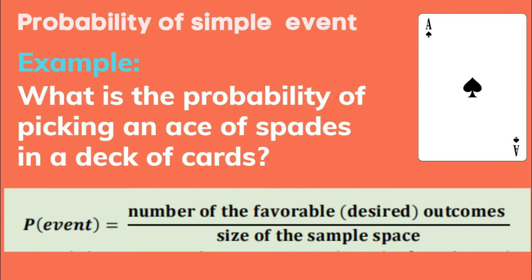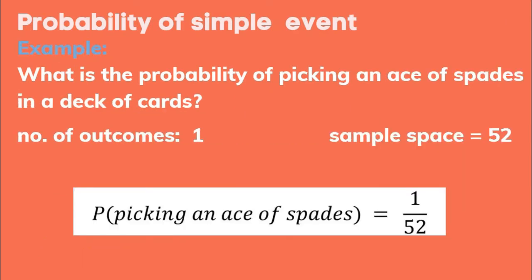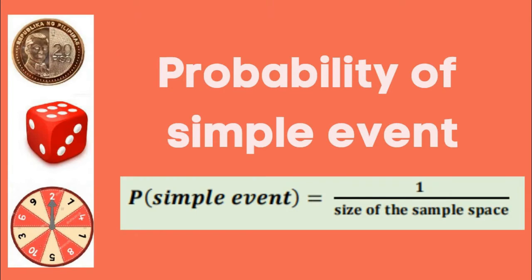Next, what is the probability of picking an ace of spades in a deck of cards? The event is picking an ace of spades. There is only 1 ace of spades, so the number of outcomes is 1. There are 52 cards in a standard deck, so the sample space is 52. Therefore, the probability of picking an ace of spades is equal to 1 over 52. Remember that for a simple event, its numerator is always 1 over the size of the sample space.